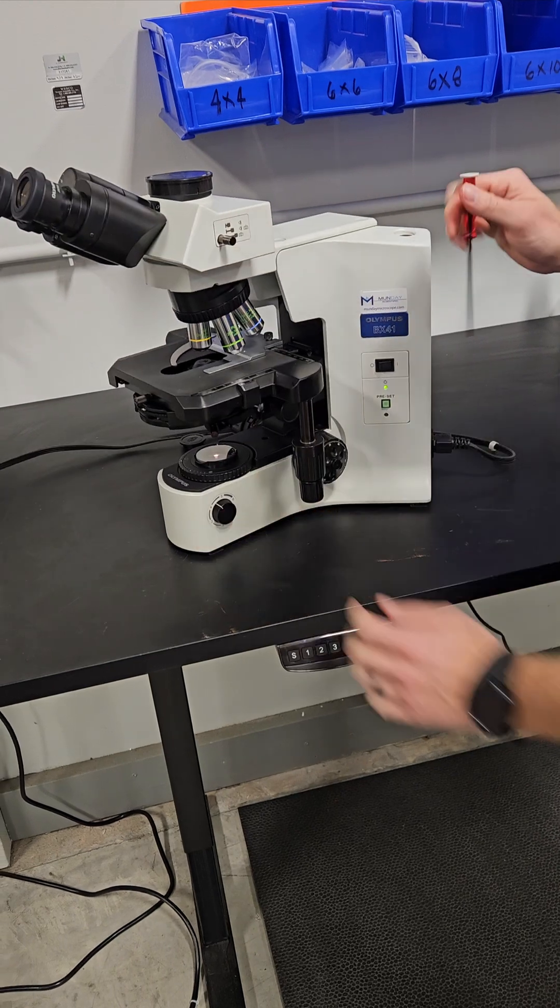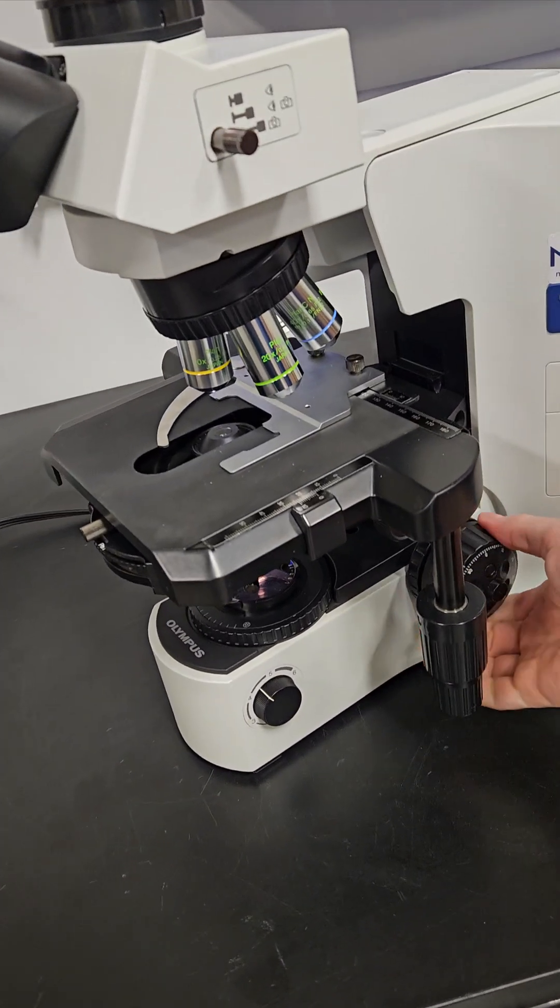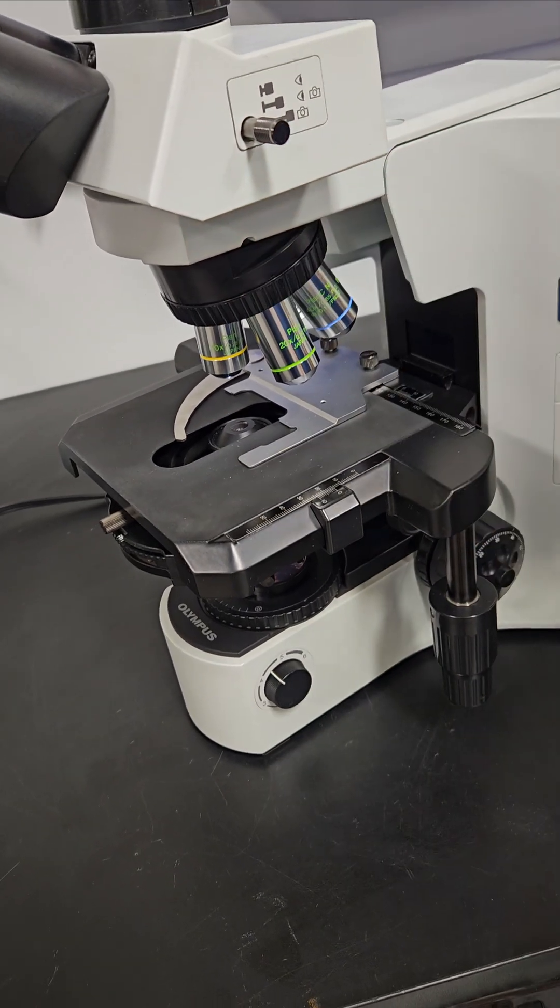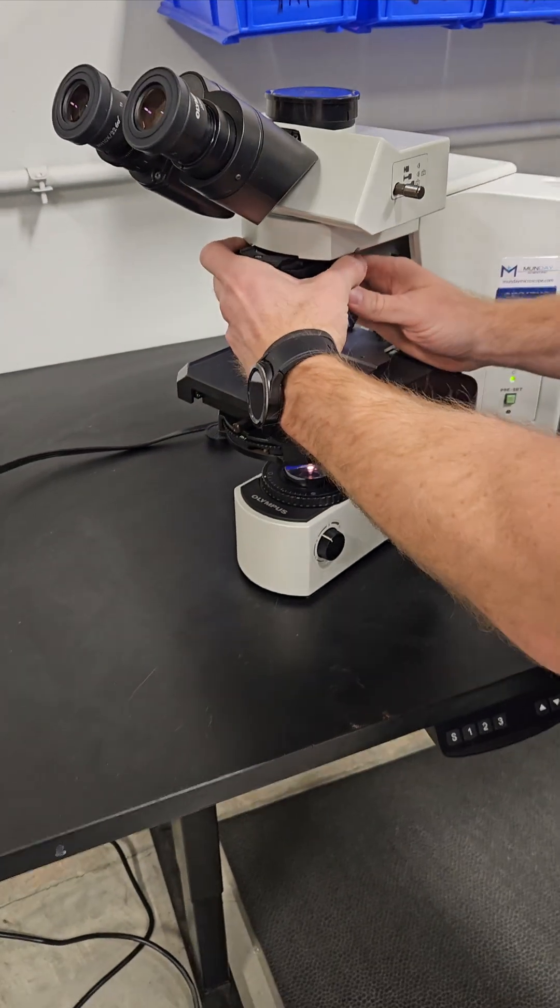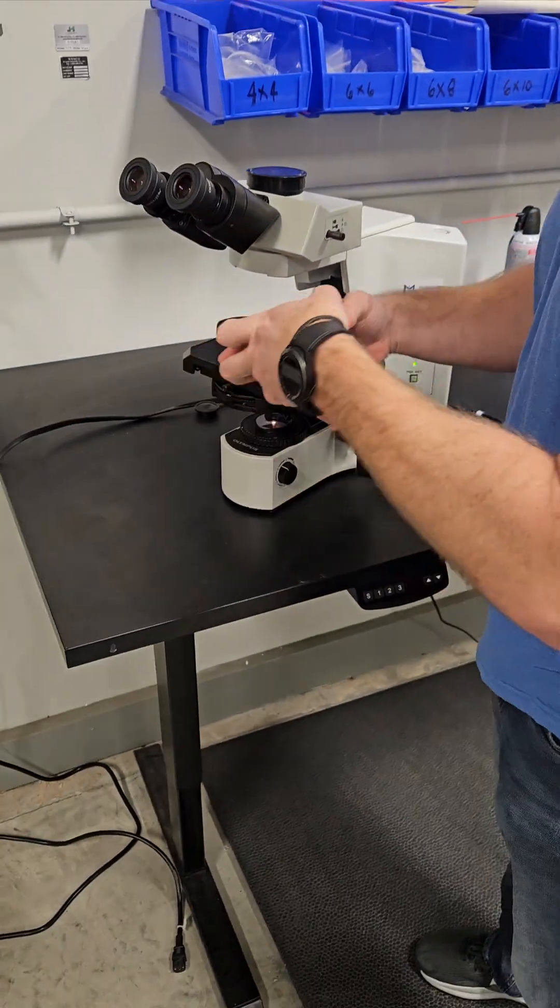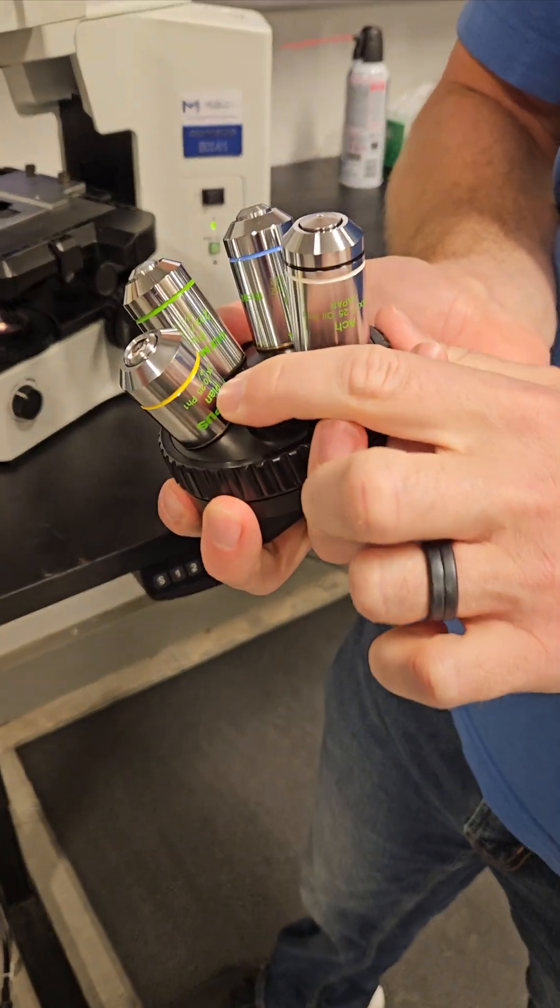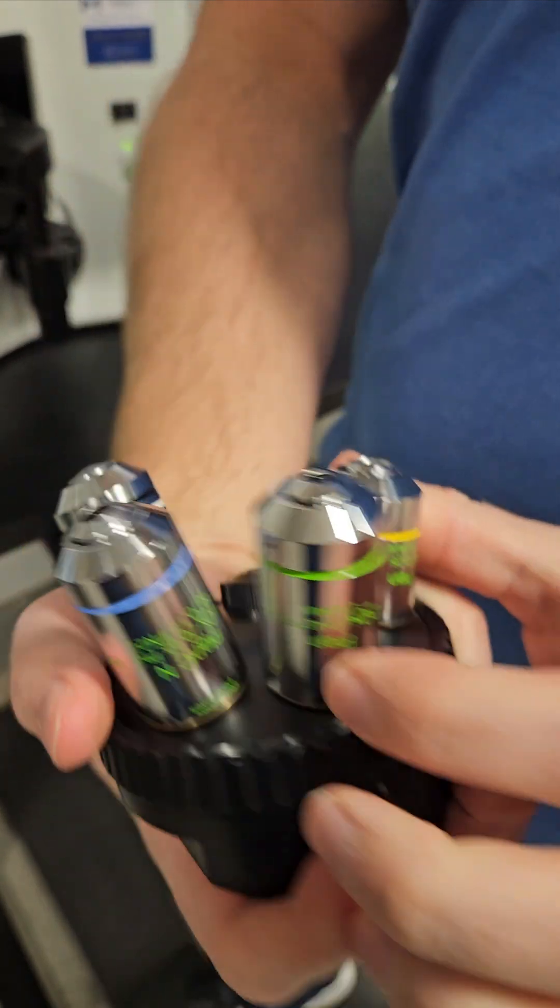For the phase scope, we're going to go over the objective. So let's take the nose piece out. We're going to drop the stage first. That's just going to limit the chance that we hit the objectives on the stage. Once we loosen that screw, we're going to go over the objectives. We have a 10X, a 20X, a 40X, and a 100X.